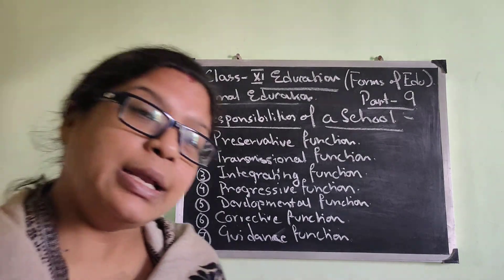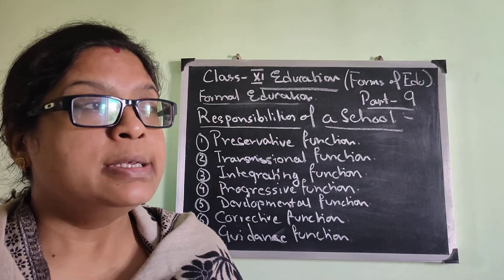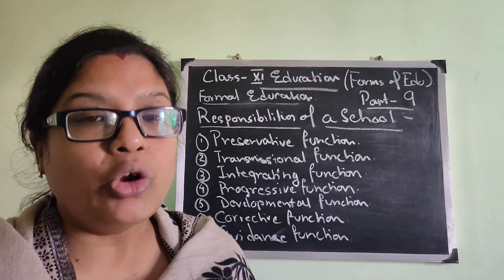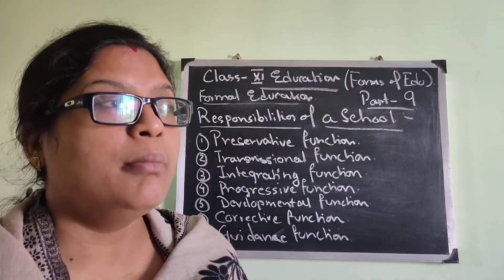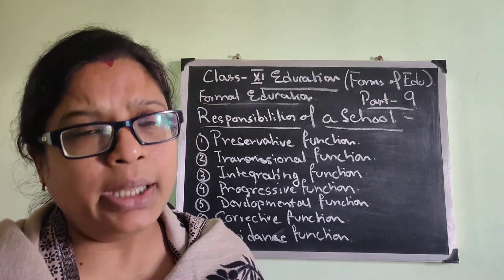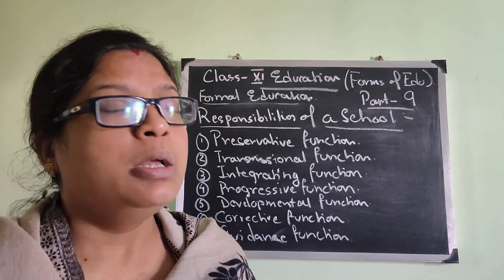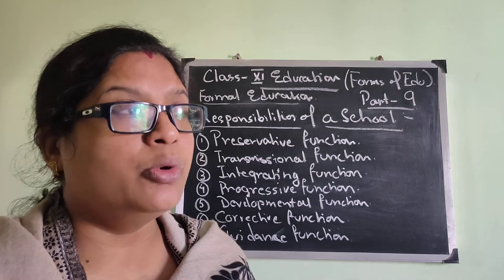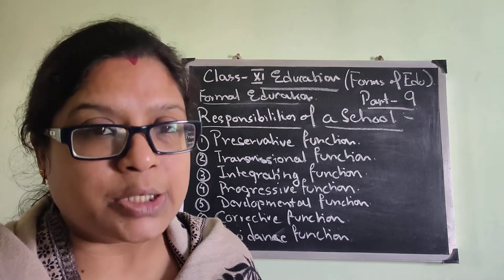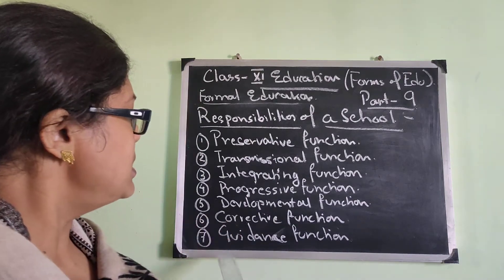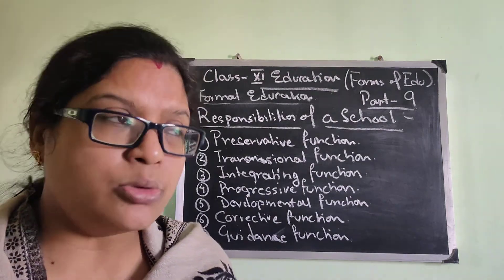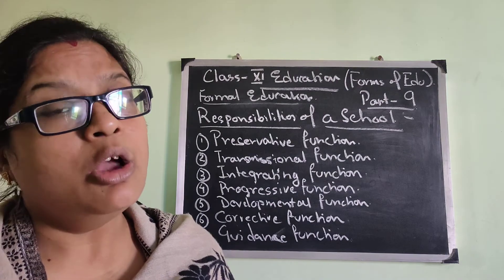Next point: Guidance Function. Guidance and corrective function are more or less the same — guiding you from beginning to end, not only through knowledge and education but also in your personal life. When you feel problems — social problems, financial problems — the school cooperates with you so that your life can run smoothly. These are the responsibilities of a school as a formal institution.